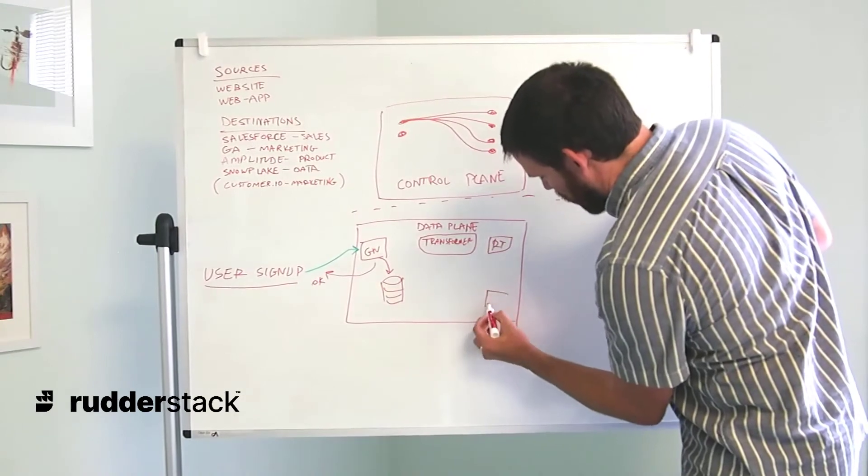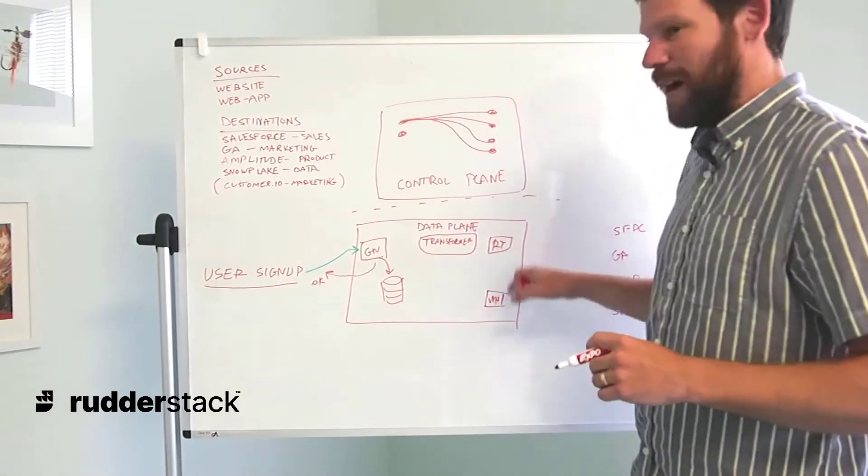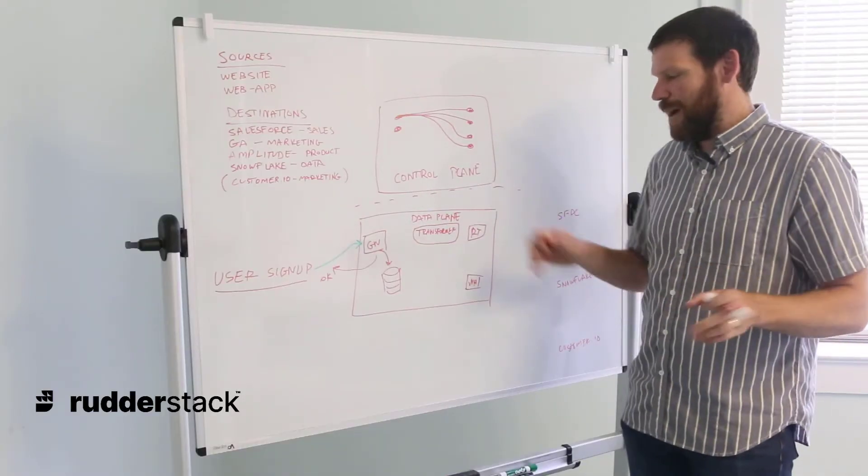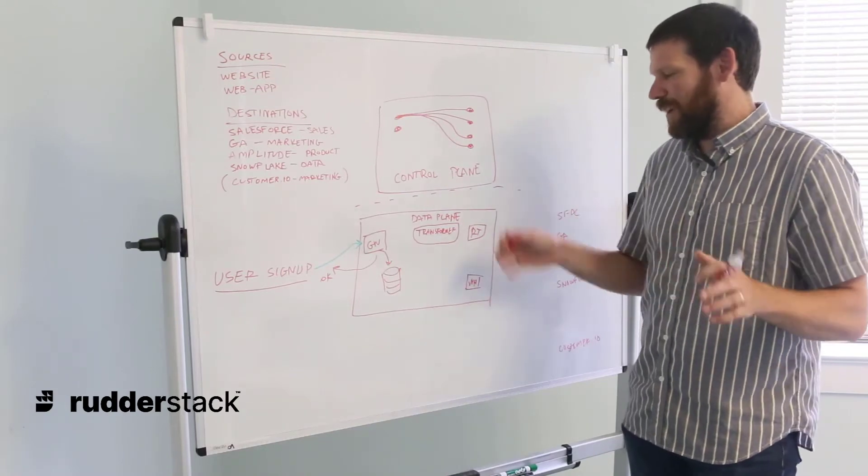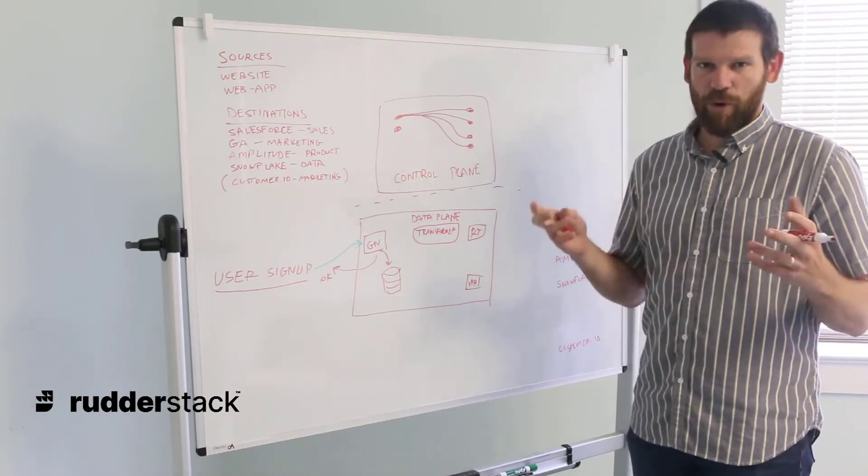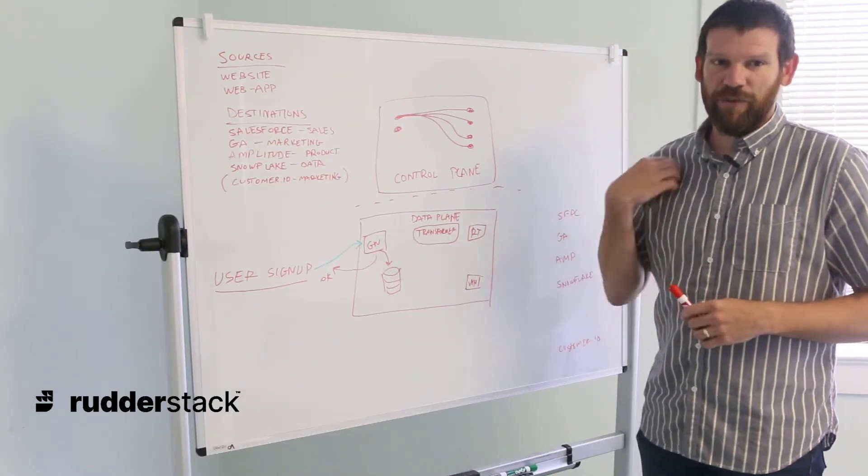We also have a warehouse service, which is going to treat warehouse and batch destinations a little bit differently. We'll discuss that in a second. Then there are some other pods for monitoring event metrics, reporting, things like that. But these are going to be the main pods that we're going to discuss for how we process data in the RudderStack server.